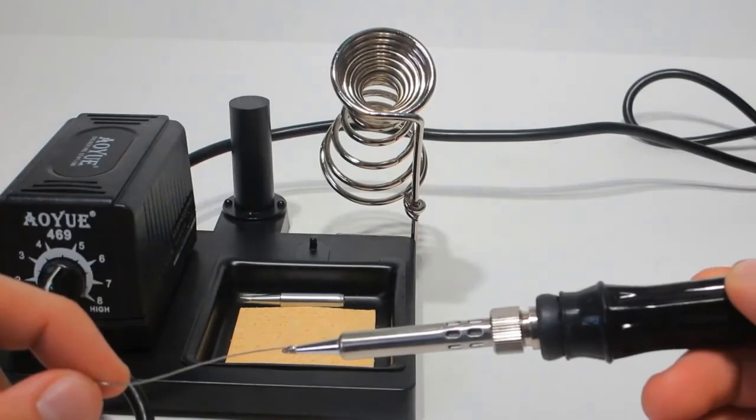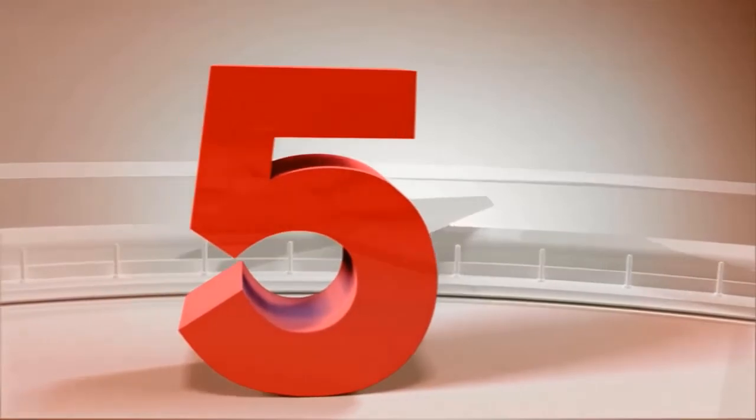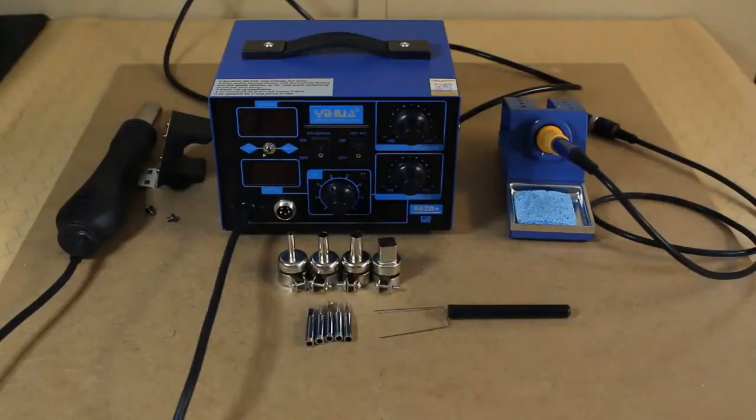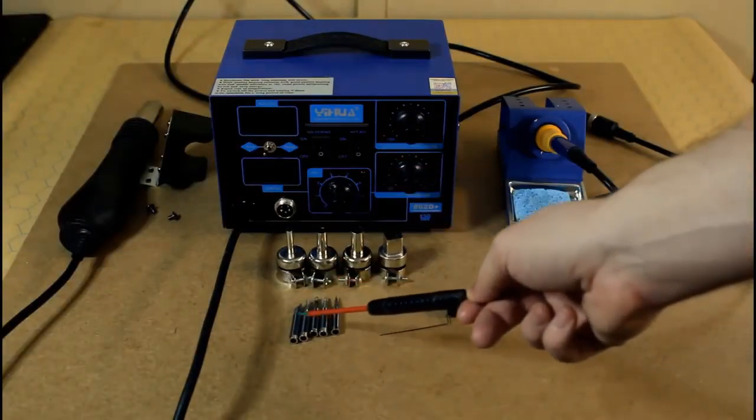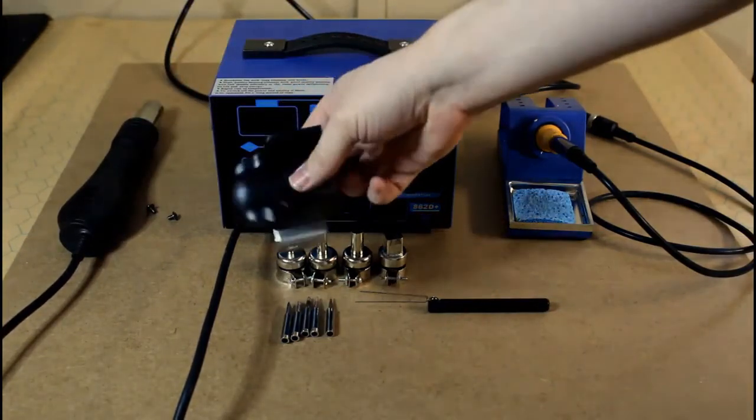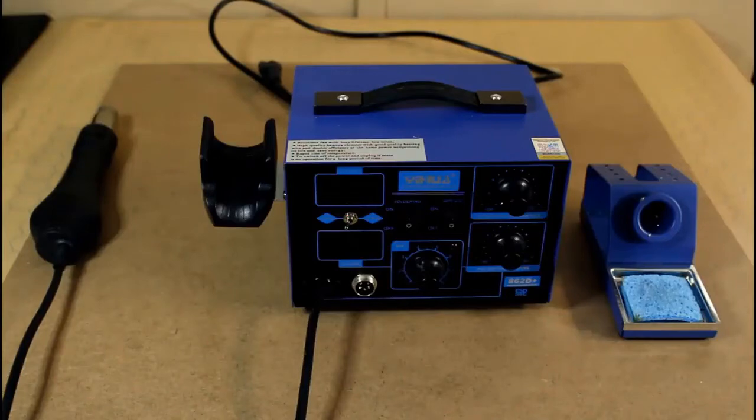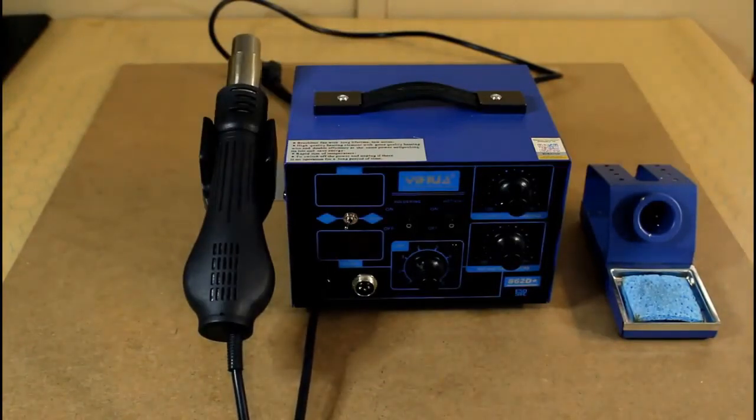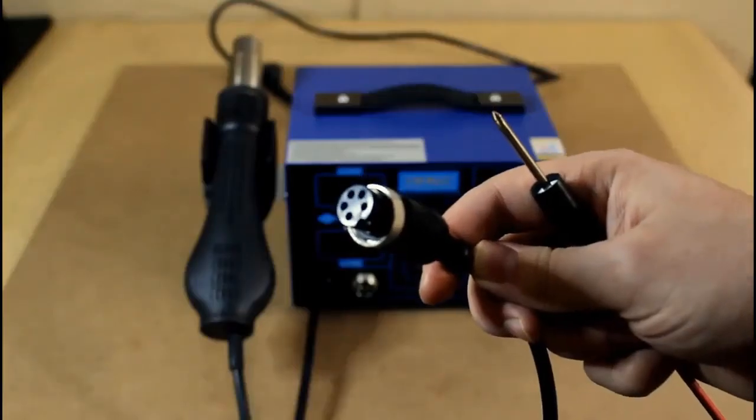And our final pick is Yihua 862BD Plus SMD ESD safe two in one. This unit now features three LED tubes display and you can easily change the LCD digital readouts back and forth centigrade to Fahrenheit for the soldering iron and hot air temperatures with the push of a button. This unit features temperature control technology which the program will cycle every 20 milliseconds to detect the actual temperature of the soldering iron's heating element, quickly correct it with a rapid return to the correct set temperature.